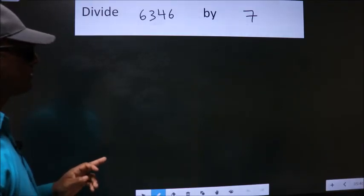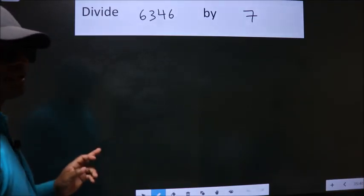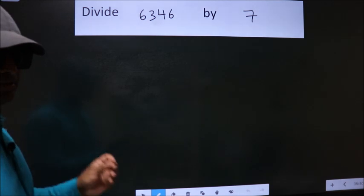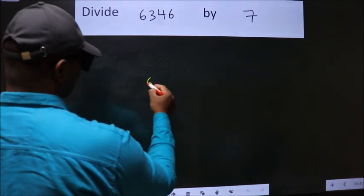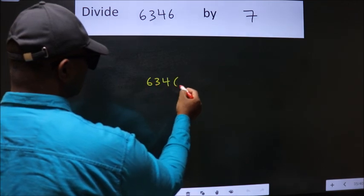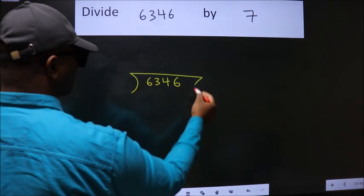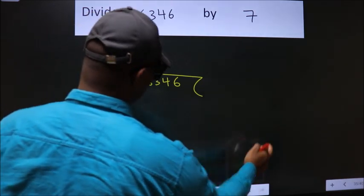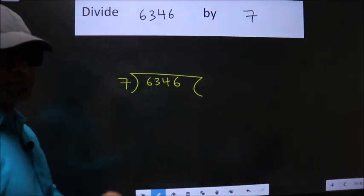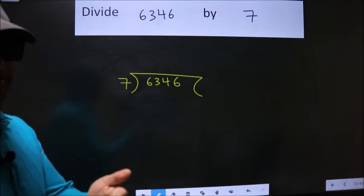Divide 6346 by 7. To do this division we should frame it in this way. 6346 here, 7 here. This is your step 1. Next.